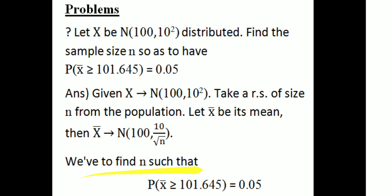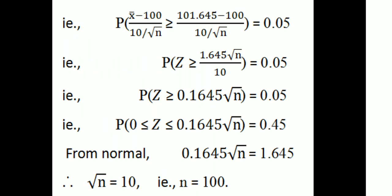We have to find n such that P(x̄ ≥ 1.1645) = 0.05. Standardizing: x̄ minus 100 divided by 10/√n. That is, probability of (x̄ − 100)/(10/√n) greater than or equal to (1.1645 − 100)/(10/√n) equal to 0.05.